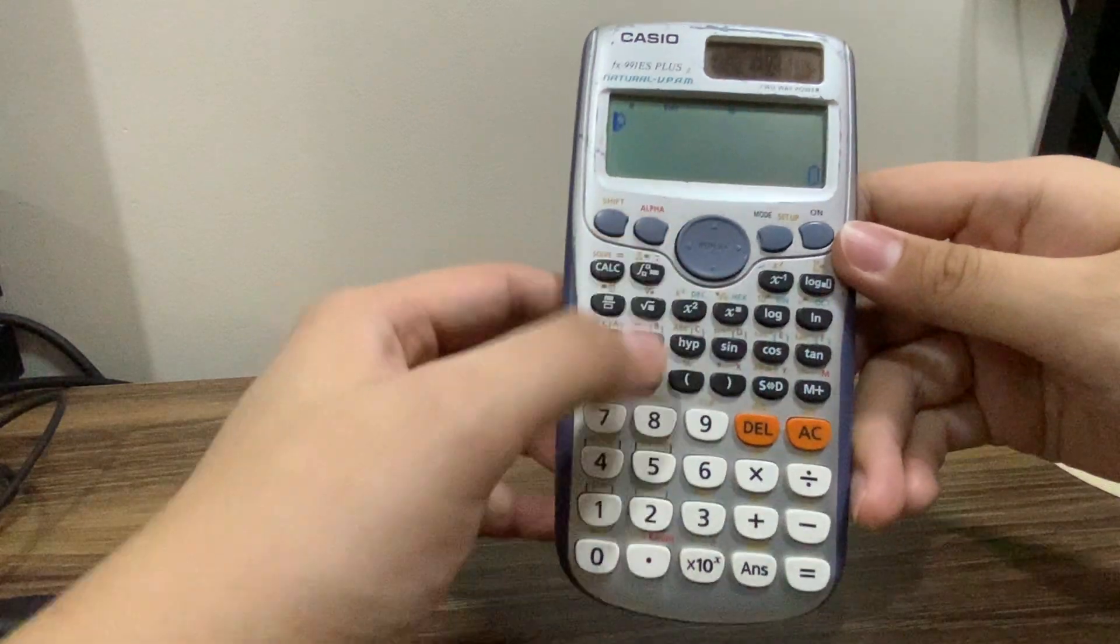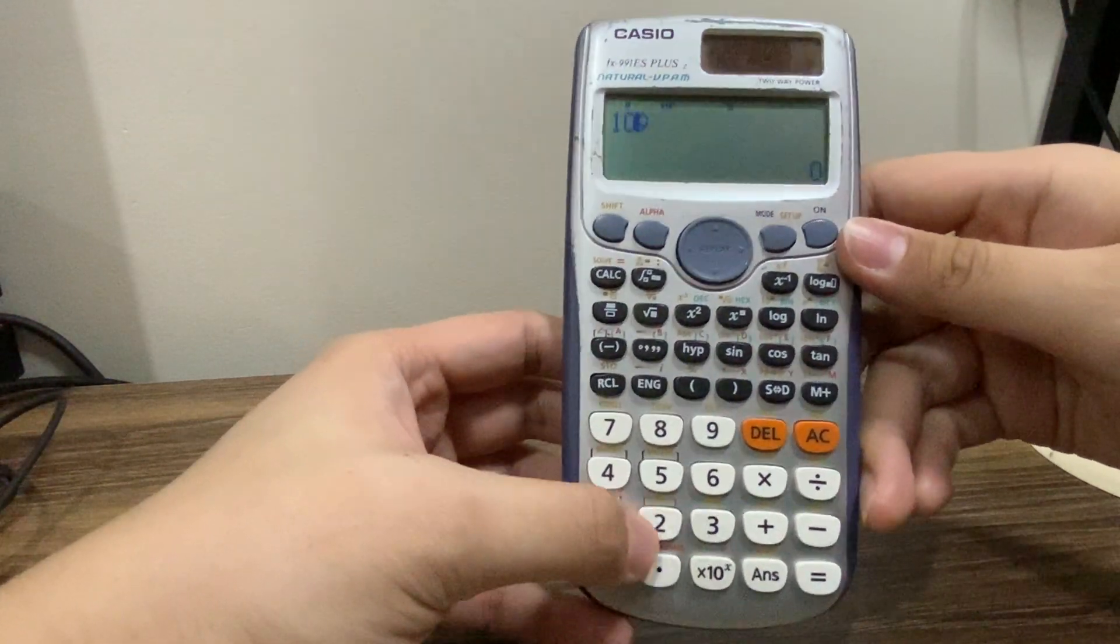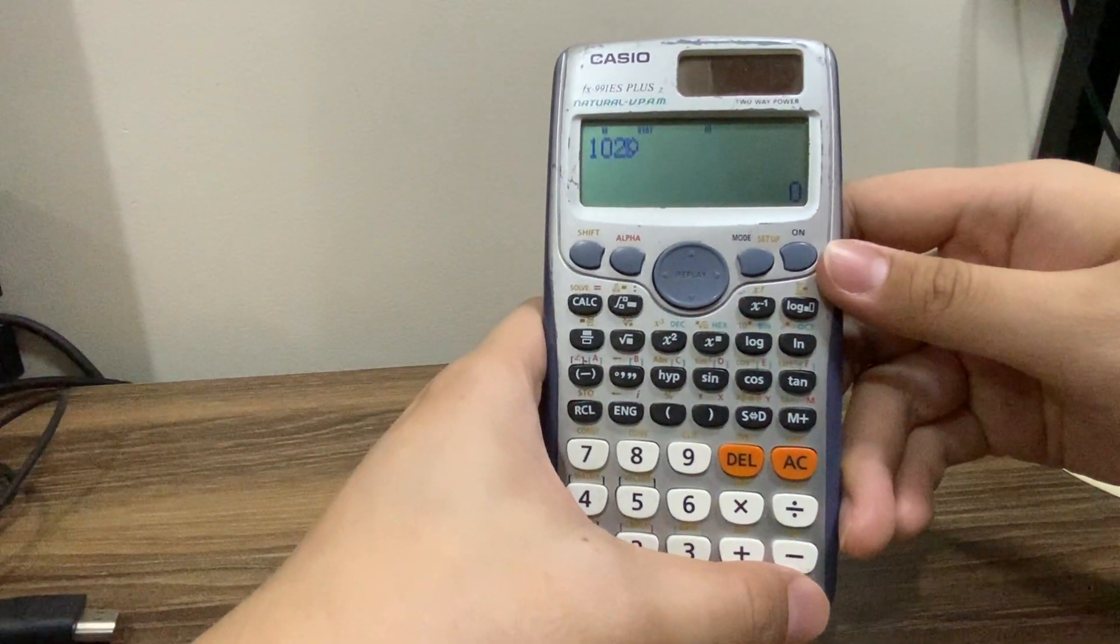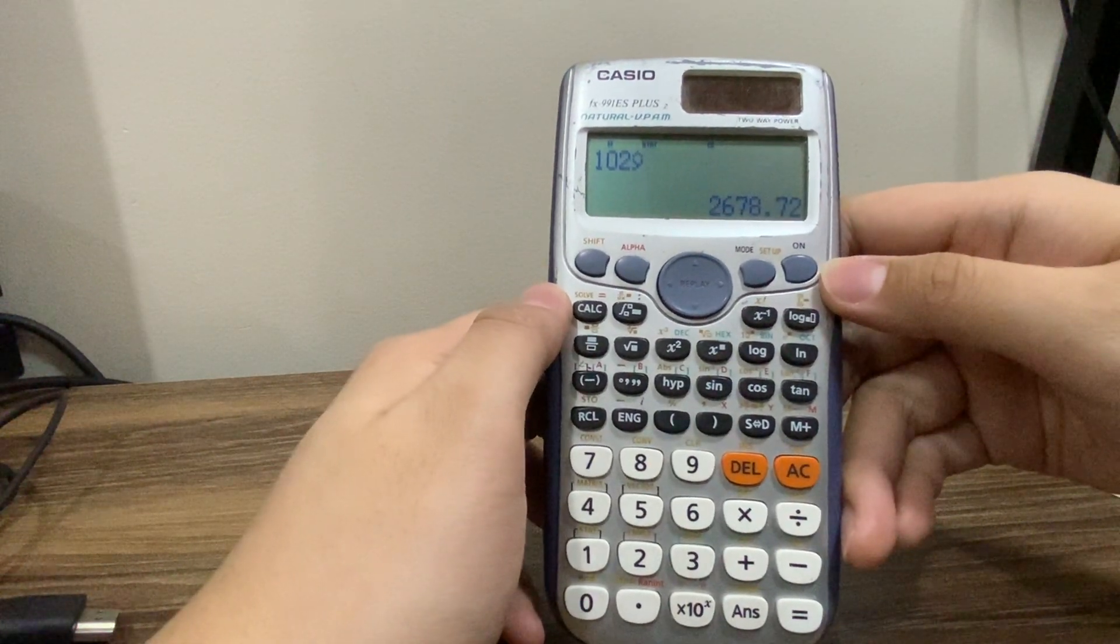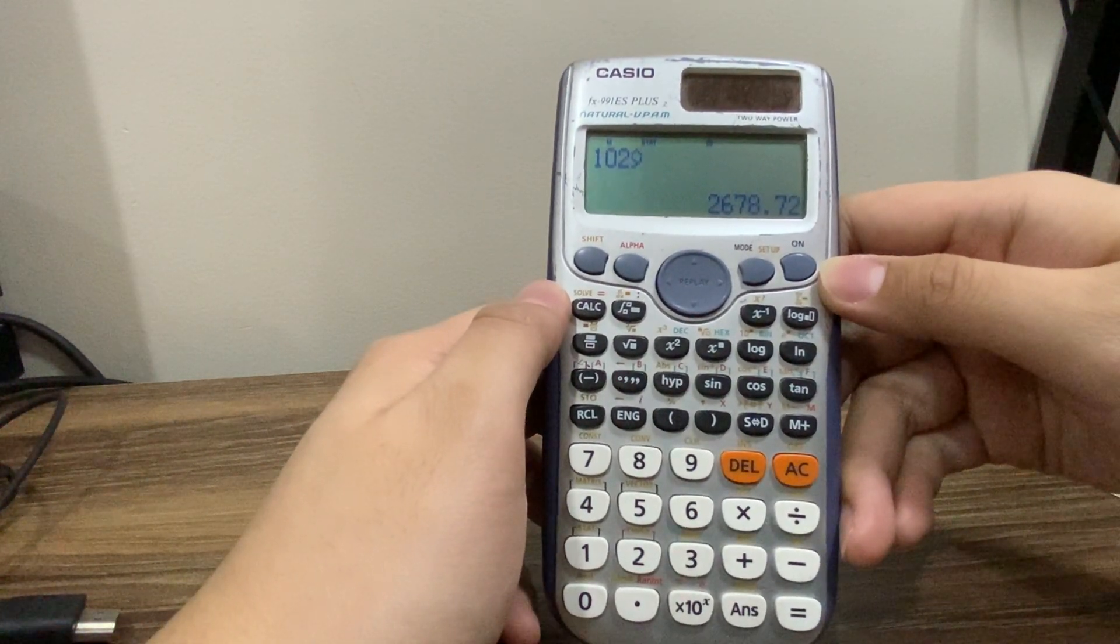Okay, so we want to get the value at 102. So click 102 y-hat. So now, the saturated water vapor enthalpy is 2678.72.